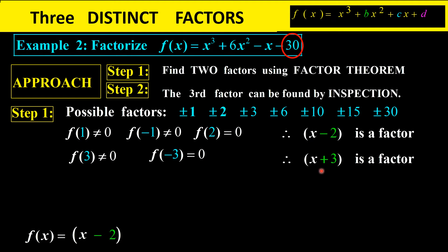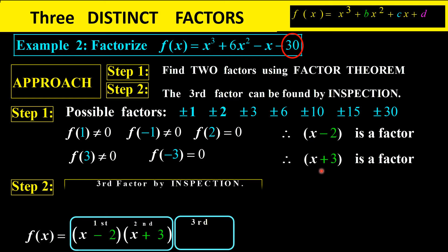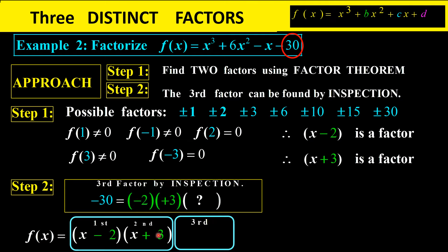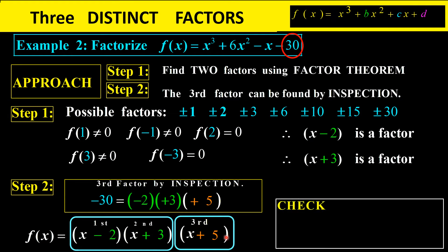Now for the third factor by inspection: using the constant negative 30, we already have negative 2 and positive 3 from our factors. Negative 2 times positive 3 is negative 6, and negative 6 times positive 5 gives negative 30, so the third factor is x plus 5. Verification: 1 plus 6 minus 1 minus 30 gives negative 24, and (1−2)(1+3)(1+5) also gives negative 24. Correct.